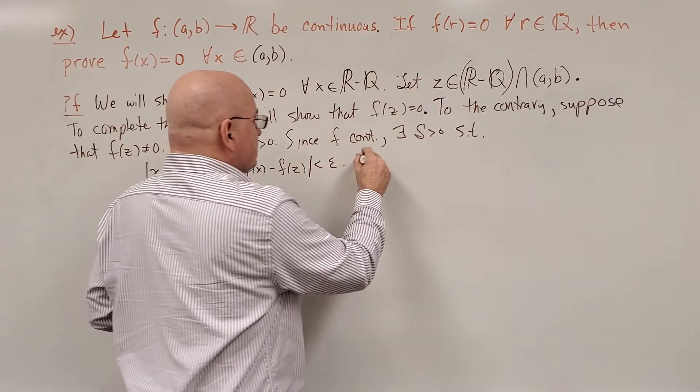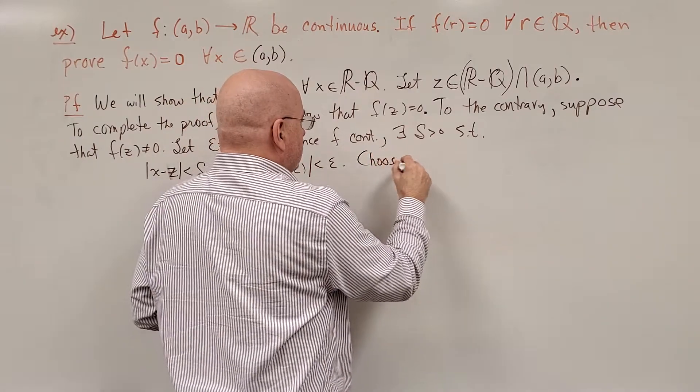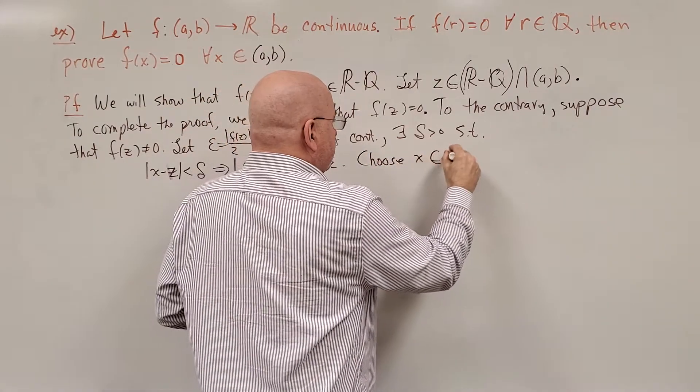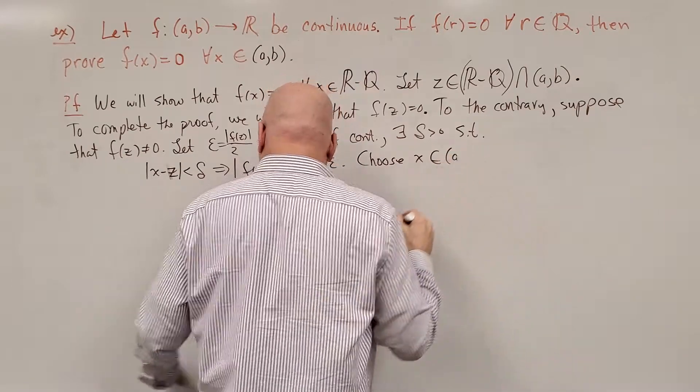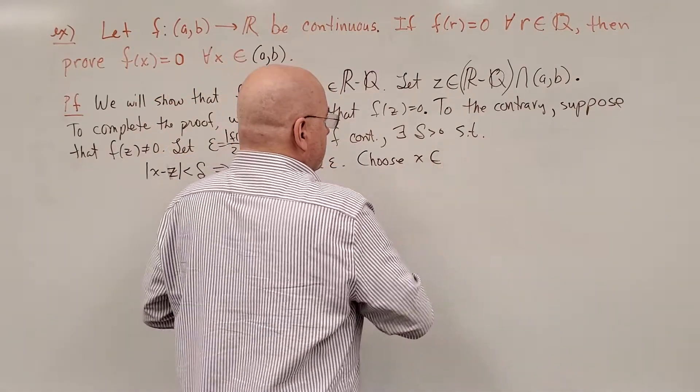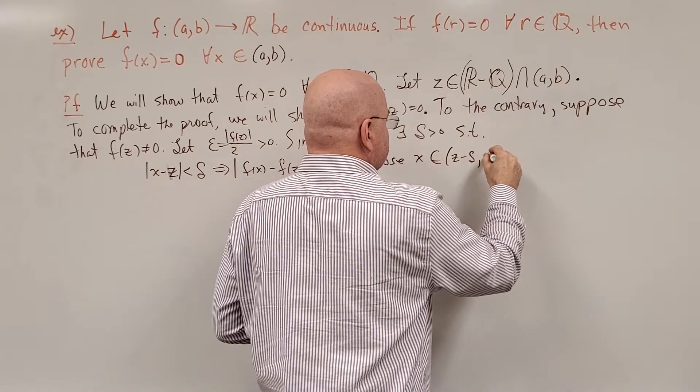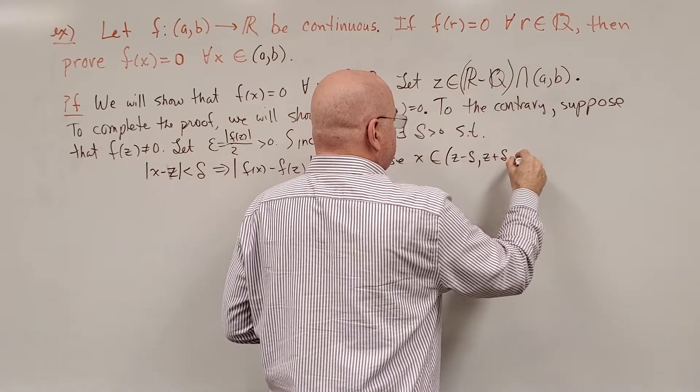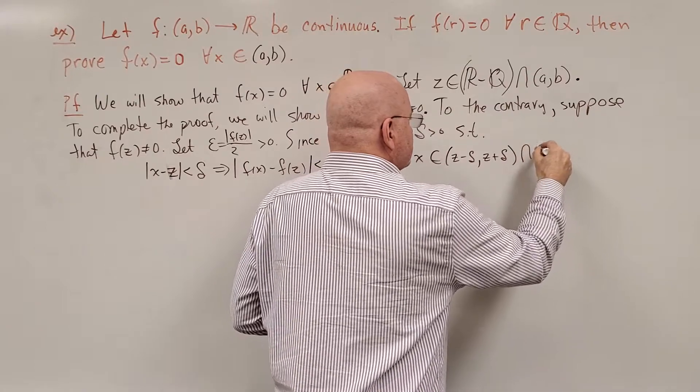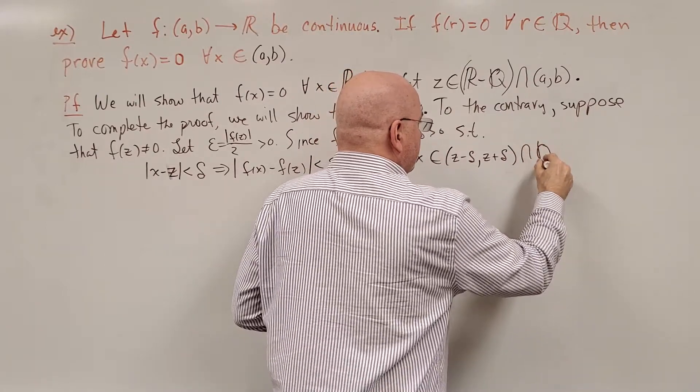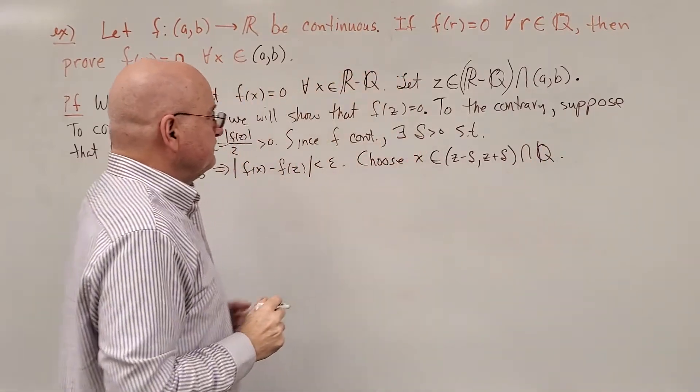Let's choose an x in the interval, in the interval (z - delta, z + delta), that is a rational number.